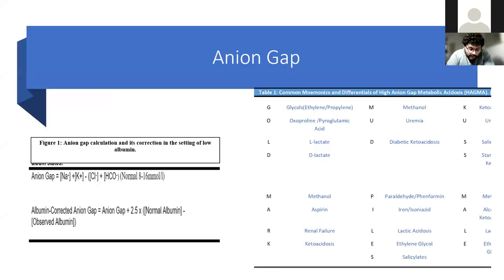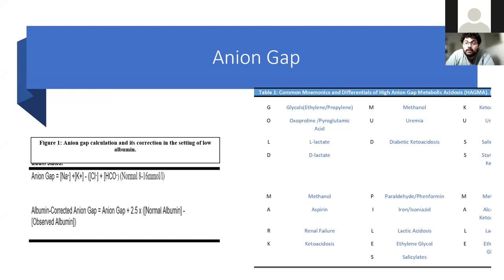The anion gap is an easy bedside calculation you can make in the ED to determine the likely cause of someone's acidosis. If it's a normal anion gap, you're thinking it's probably through the loss of bicarbonate — either through renal or gastrointestinal routes. But if it's a raised anion gap acidosis, the causes are realistically either from endogenous toxins or from exogenous toxins.